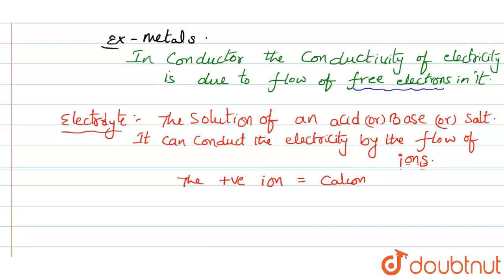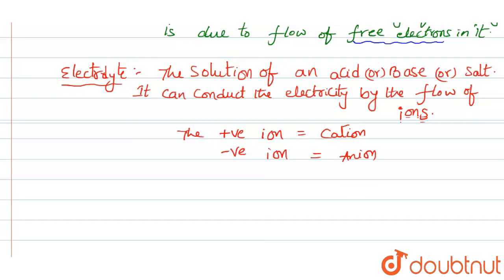It can conduct the electricity by the flow of ions. We have two types of ions here. The positive ions are called cations and negative ions are called anions.